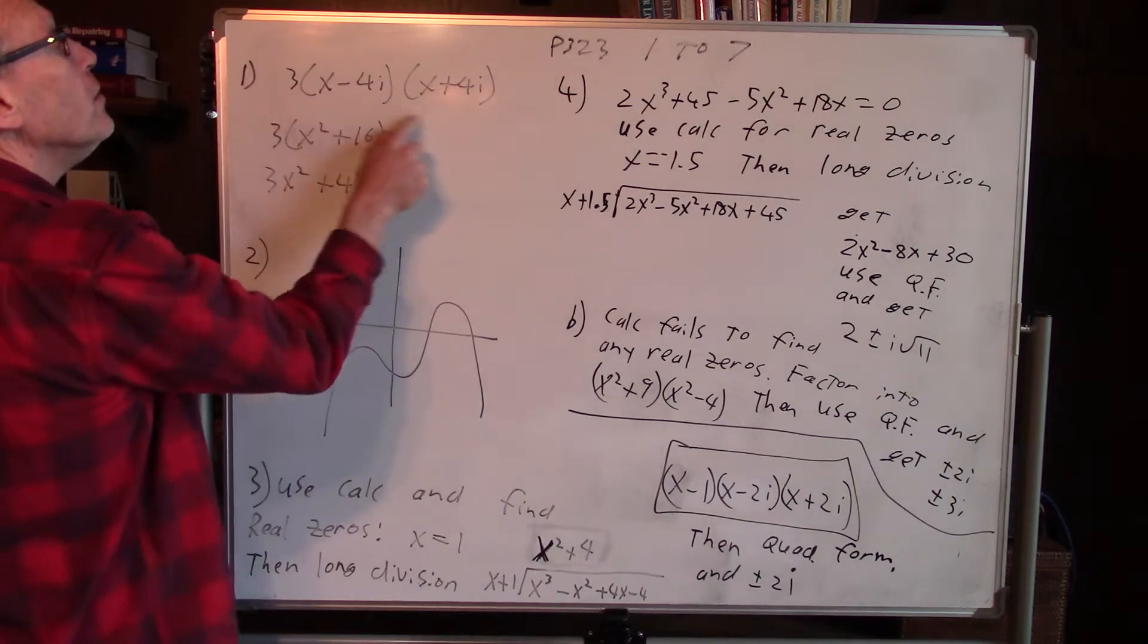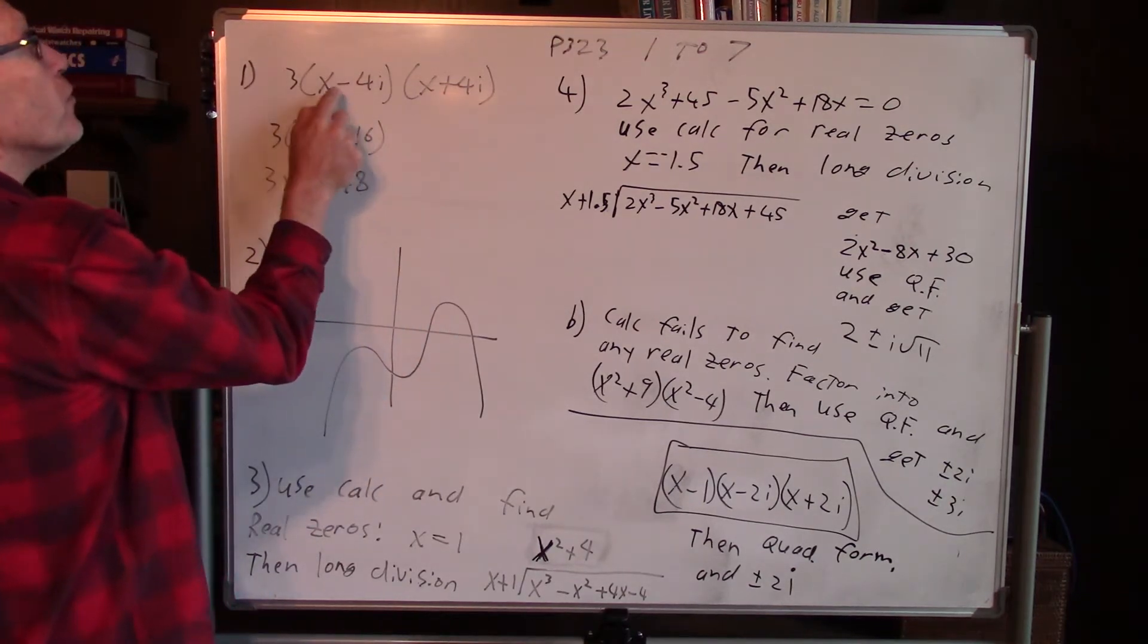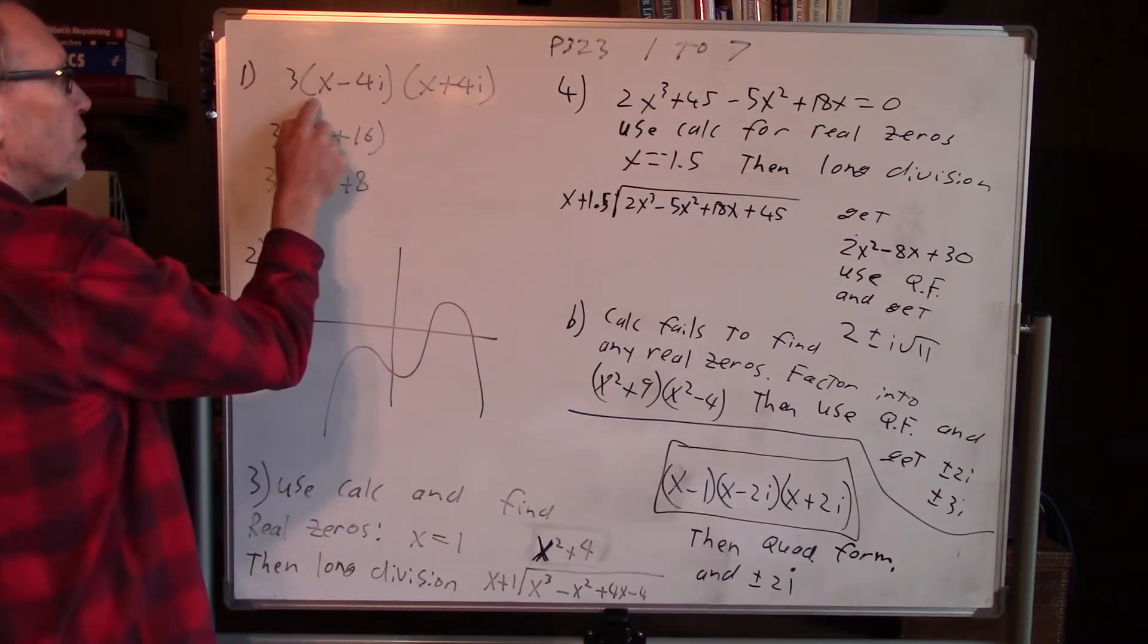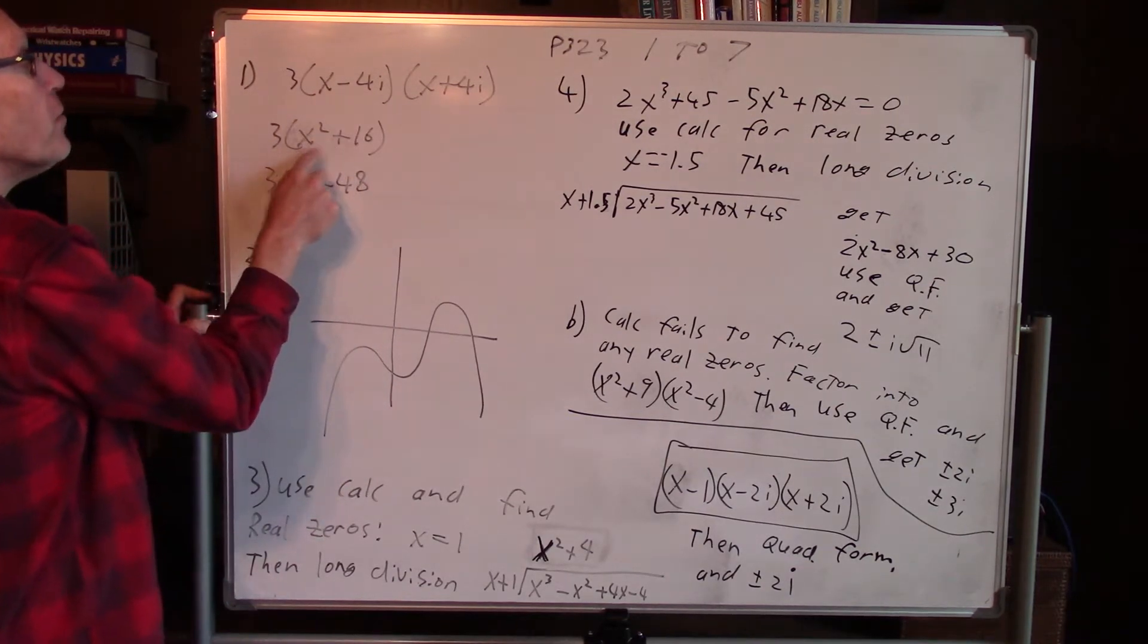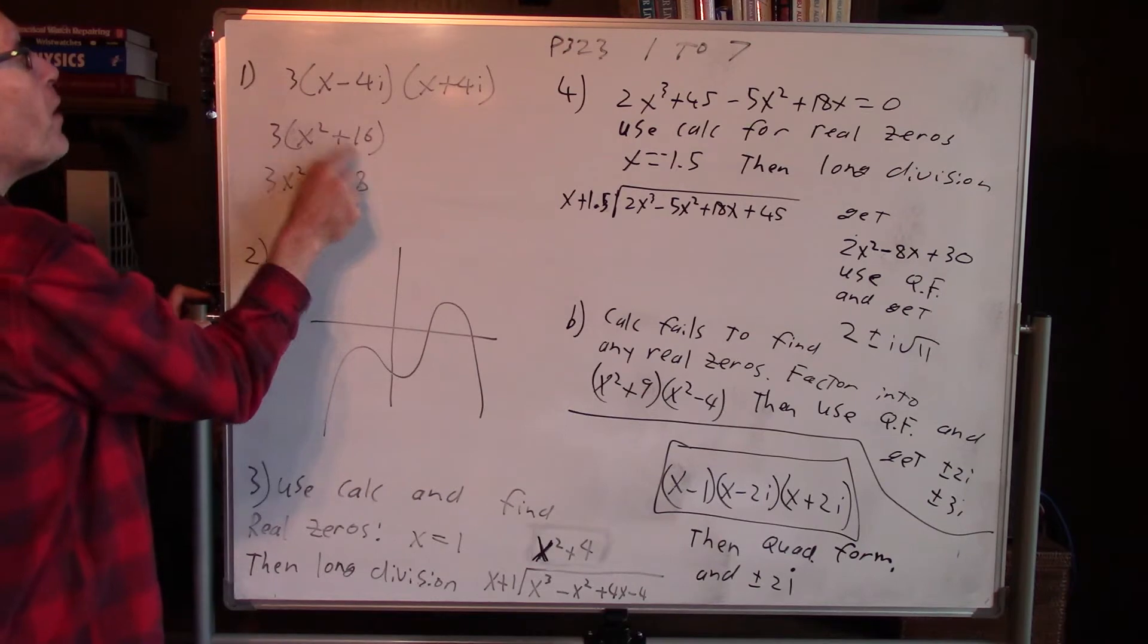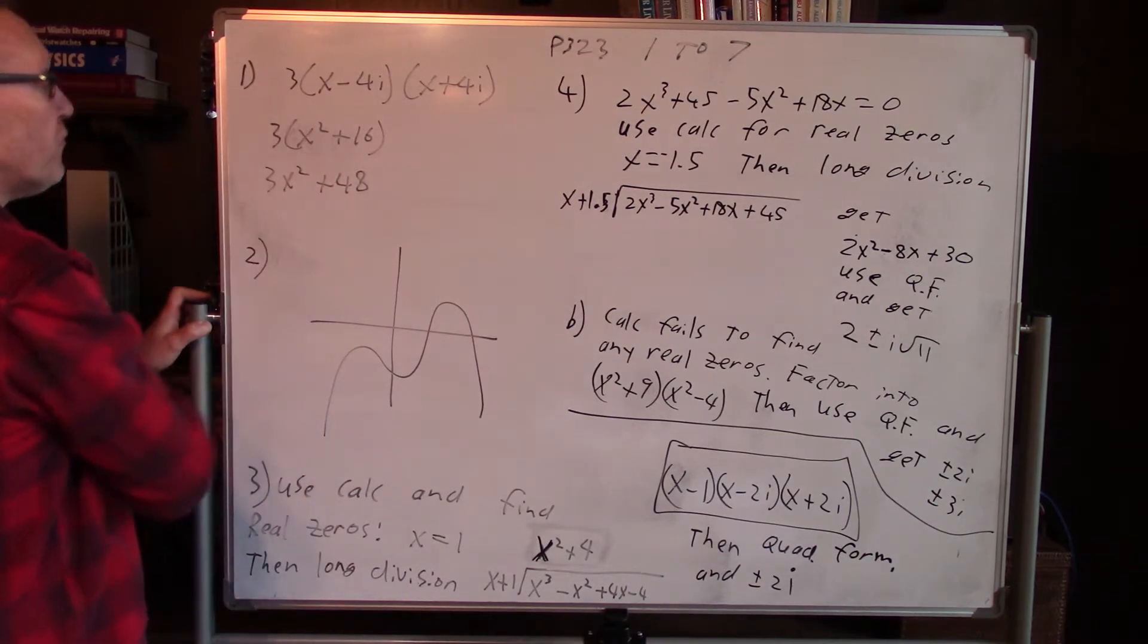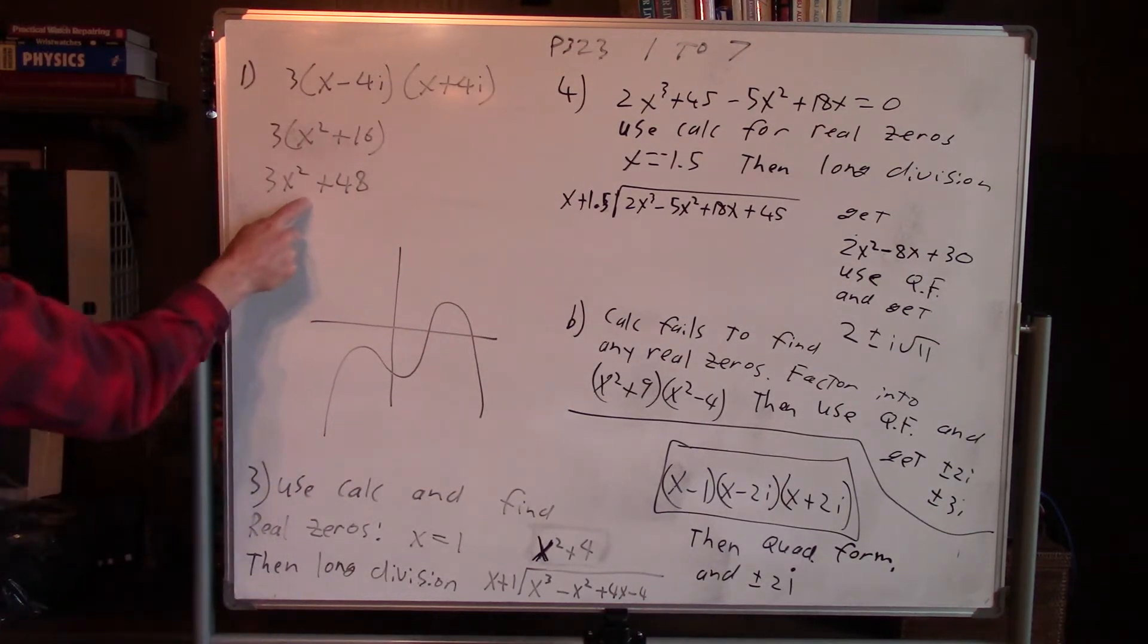So here's the quadratic. It says plus or minus 4i for the zeros, so the factors are flipped. Now if you multiply this out, these two turn into x squared plus 16. Then you multiply by 3, so you get 3x squared plus 48. That's the expanded form.